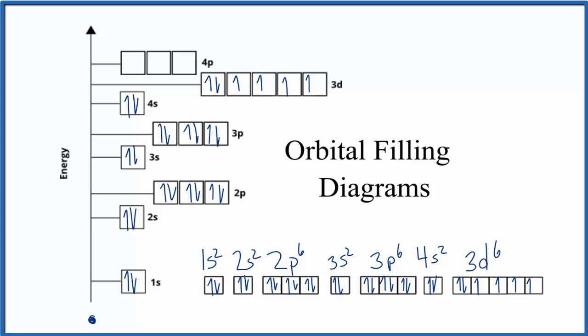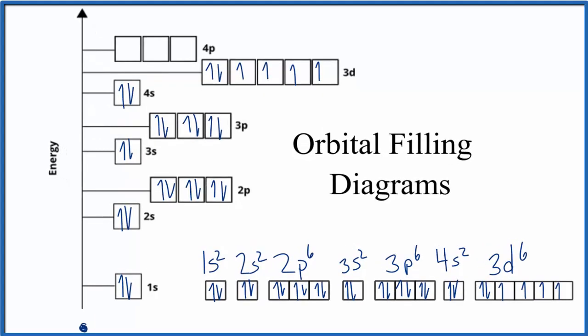To recap, all we're really trying to do with these orbital filling diagrams and electron configurations is describe where the electrons are around the nucleus of an atom, as well as the energy levels for these electrons. The key is to look at the atomic number, find the number of electrons, and then spread them out in the orbital diagram. You can start with an electron configuration if that's easier, or with the orbital diagram and then write the electron configuration. This is Dr. B — thanks for watching.